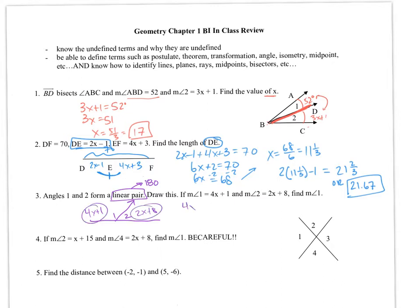So 4x plus 1 plus 2x plus 8 gives me 180. So 6x plus 9 equals 180. Subtract 9 from each side. 180 minus 9 is 171. Divide that by 6, and you end up with 28.5. That's the value of x.